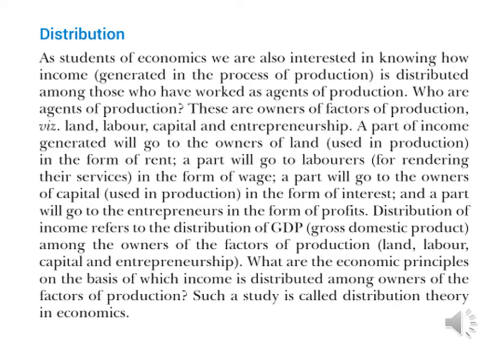Distribution of income refers to the distribution of GDP — gross domestic product — among the owners of the factors of production, that is land, labor, capital, and entrepreneurship. The economic principles on the basis of which income is distributed among owners of the factors of production form what is called distribution theory in economics. So distribution has four parts: land as rent, labor as wages, capital as interest, and entrepreneurship as profit.